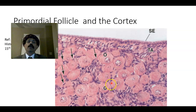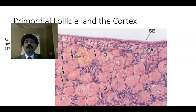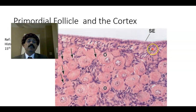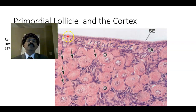We are looking at the cortex of the ovary and the primordial follicles here. The oocyte is surrounded by simple squamous epithelium — these are the primordial follicles. This is the cortex of the ovary and this is the tunica albuginea, which is dense irregular connective tissue. The tunica albuginea in the ovary is thinner than that of the testis. It is lined by simple cuboidal epithelium — these are the surface epithelium, also called misnomerly as germinal epithelium.